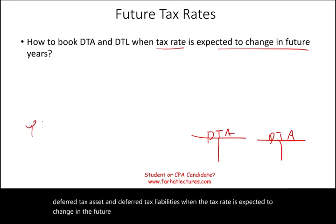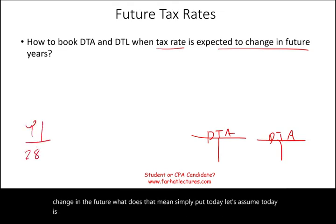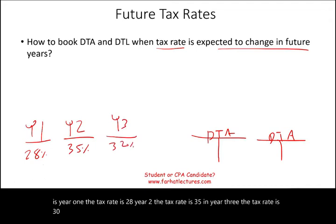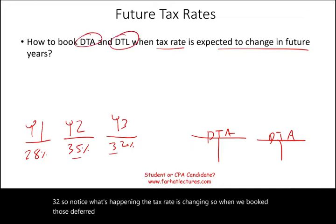What does that mean? Simply put, let's assume today is year one and the tax rate is 28%. Year two, the tax rate is 35%. In year three, the tax rate is 32%. Notice what's happening — the tax rate is changing. So when we book those deferred tax assets and deferred tax liabilities, which rate do we use?